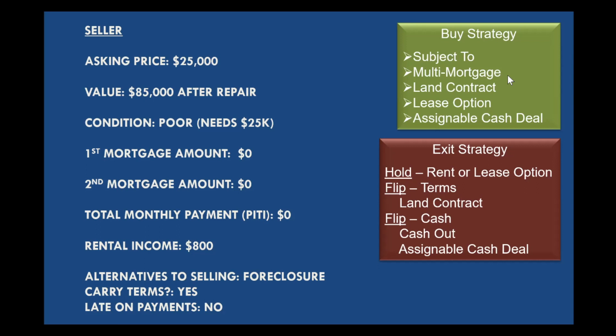We're going to try to make the payments without interest. They don't owe anything — they want $25,000 for the property. So we pay them a certain amount of money per month until we pay out the $25,000.